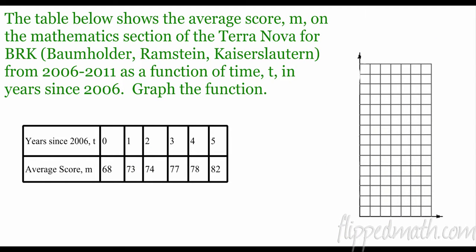All right. So the table below shows the average score M on the mathematics section of the Terra Nova for the Baumholder, Ramstein, and Kaiserslautern schools for the following years, 2006 to 2011, as a function of time t in years since 2006. So it says since 2006. So zero, this would be 2006 because zero plus 2000, and then this would be 2007, 2008, 2009, 2010, 2011. So we want to graph this function. A couple of things. First of all, which of this is our independent and which is our dependent, or which is our X and which is our Y, which is our input, which is our output? Well, I like to think of which depends on the other. The score depended on the year. Since this depended, this is our dependent, this is our Y value. This is our independent, this is our X value.